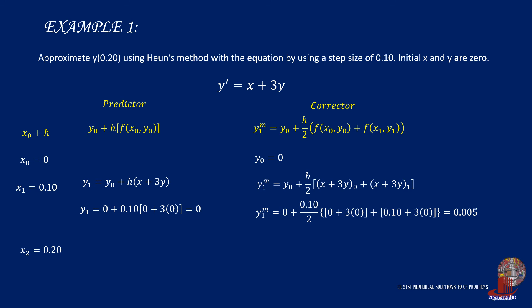Work on the predictor y2, and that is the corrected y1, which is 0.005 plus h of 0.1 times x1 of 0.1 plus 3 times y1, being 0.005. So y2 is taken as 0.0165.